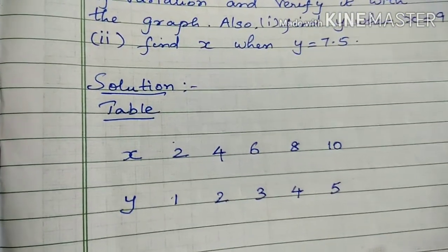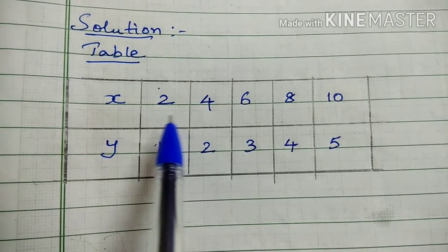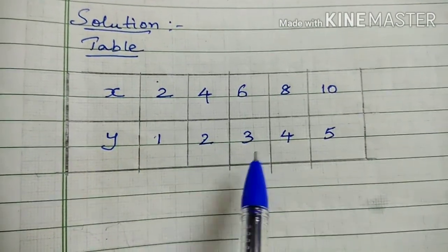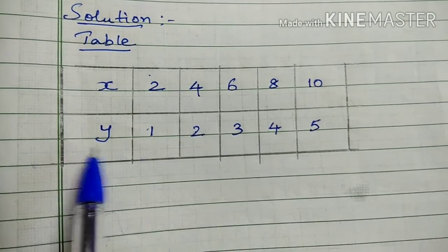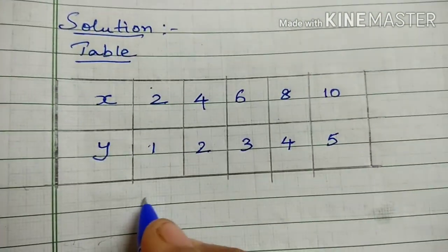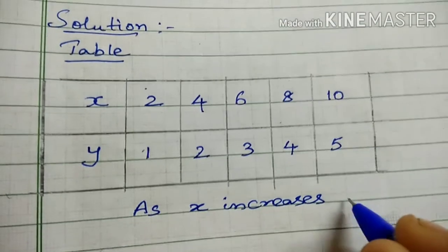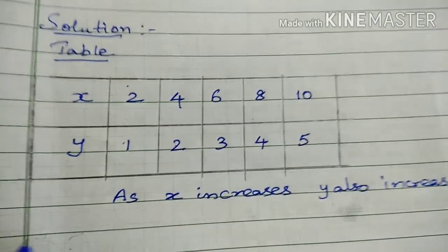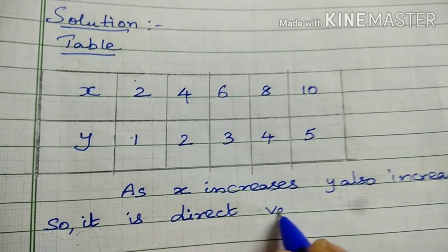x increases: 2, 4, 6, 8, 10. y increases: 1, 2, 3, 4, 5. As x increases, y also increases. So it is direct variation. We say y is equal to kx.